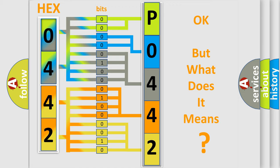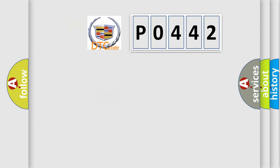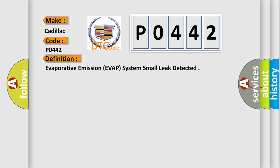We now know in what way the diagnostic tool translates the received information into a more comprehensible format. The number itself does not make sense to us if we cannot assign information about what it actually expresses. So, what does the diagnostic trouble code P0442 interpret specifically for Cadillac car manufacturers? The basic definition is: Evaporative Emission EVAP system small leak detected.